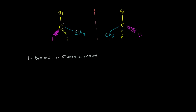Even though they have the same molecular formula, they have the same constitution — this carbon is connected to a hydrogen, a fluorine, and a bromine; this carbon is connected to the same things; this carbon is connected to a carbon and three hydrogens; so is this one. These are stereoisomers. They are mirror images of each other, so they're enantiomers.